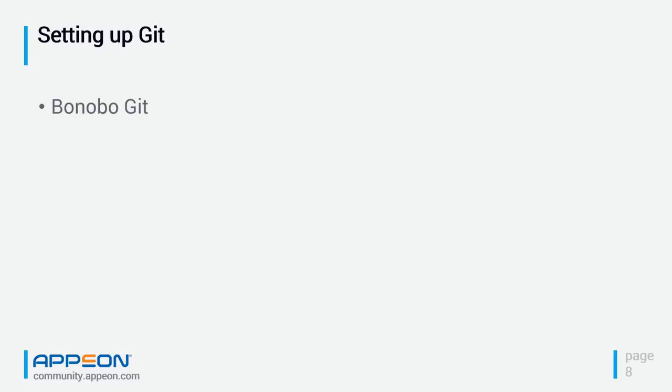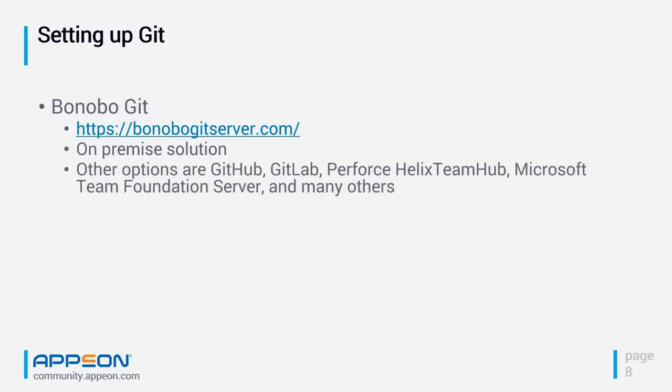Most Git servers offer either an on-premise or cloud solution. The one we're using for this demo is called Bonobo Git — it is an on-premise solution only with no cloud option. Other vendors include GitHub, GitLab, Perforce, Helix Team Hub, Microsoft Foundation Server, and Bitbucket. Most of those offer both cloud and on-premise solutions.